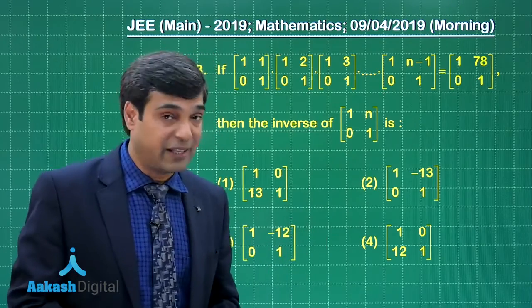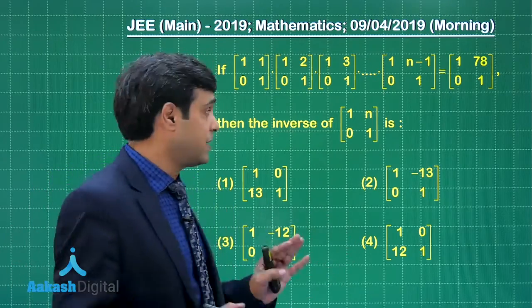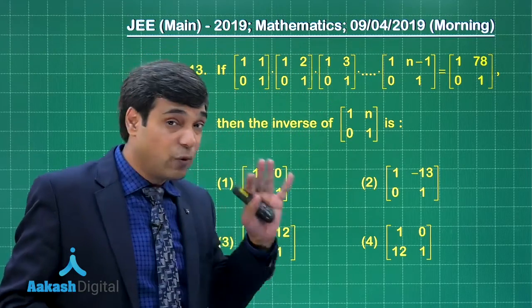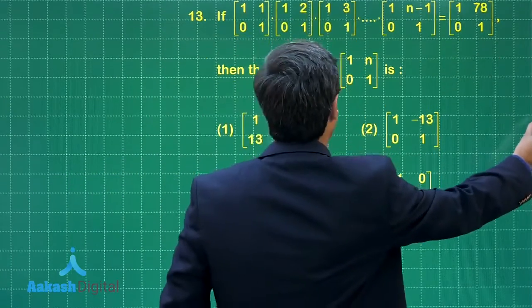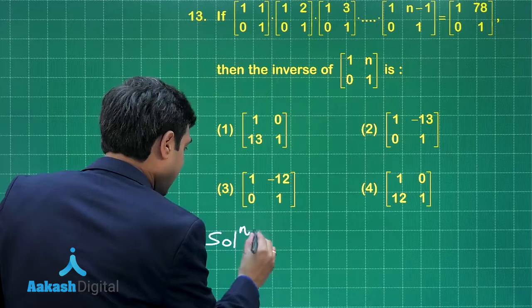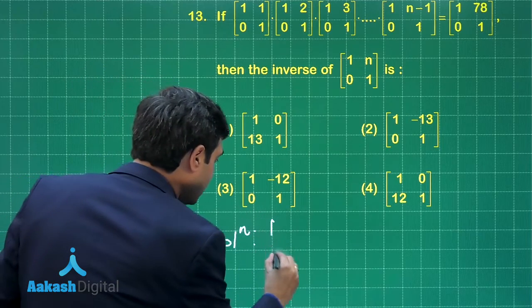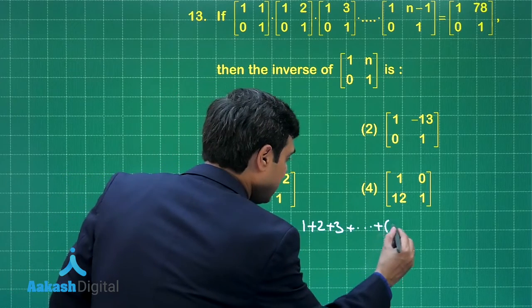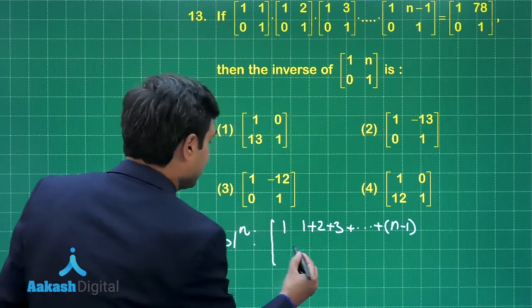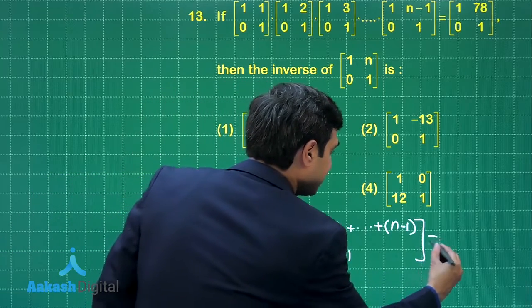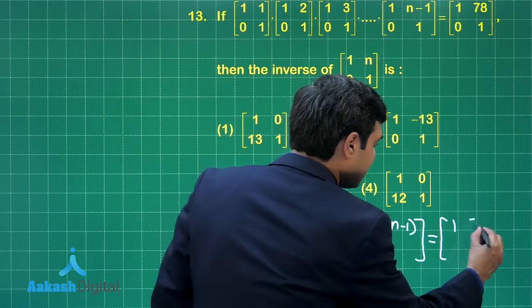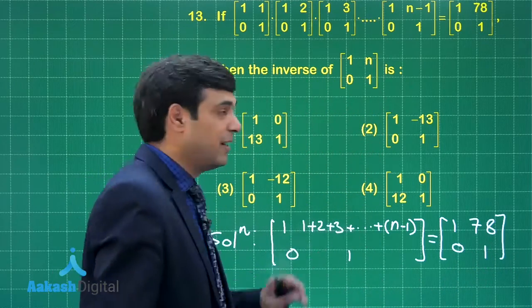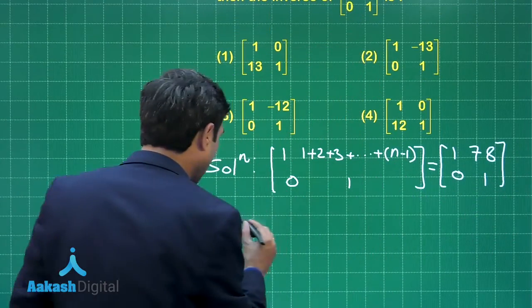First we have to find the value of n, then simply find the inverse. If you look at these matrices, there's a pattern. When you multiply, you get [1, 1+2+3+...+(n-1); 0, 1].